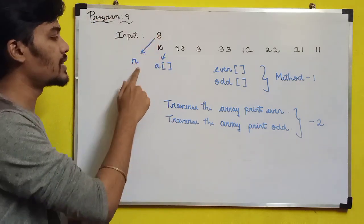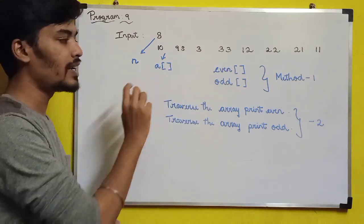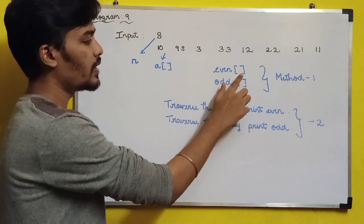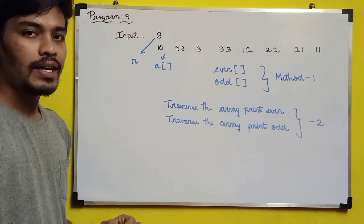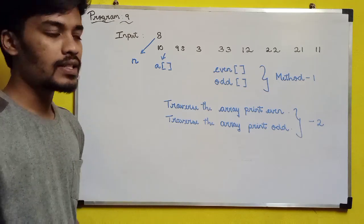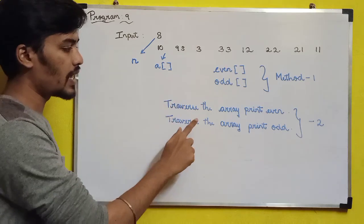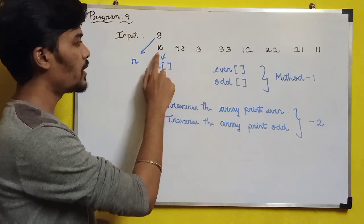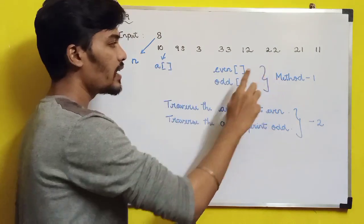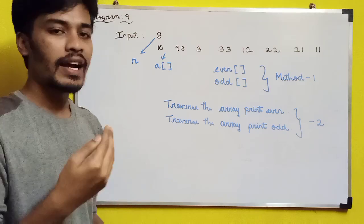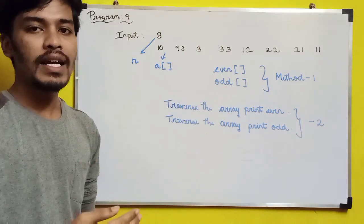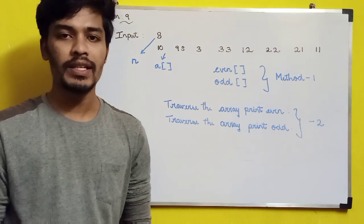They give an N value and an array of integers. In method 1, traverse the array and separate odd and even numbers into separate arrays — even numbers in an even array, odd numbers in an odd array — then print even array followed by odd array. In method 2, use the same input array and do two passes: first traverse and print only even numbers, then traverse again and print only odd numbers. Both methods produce the same output.